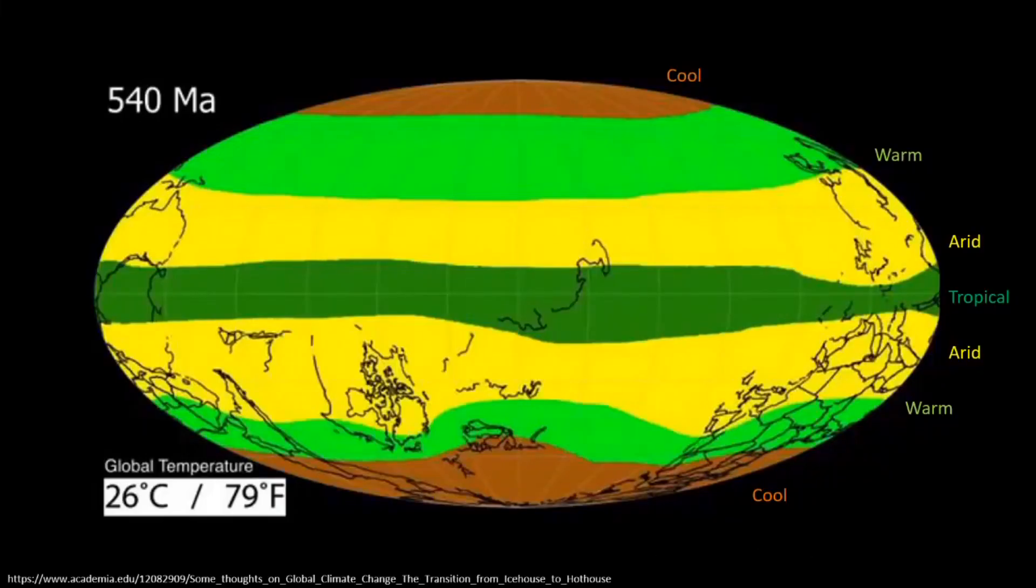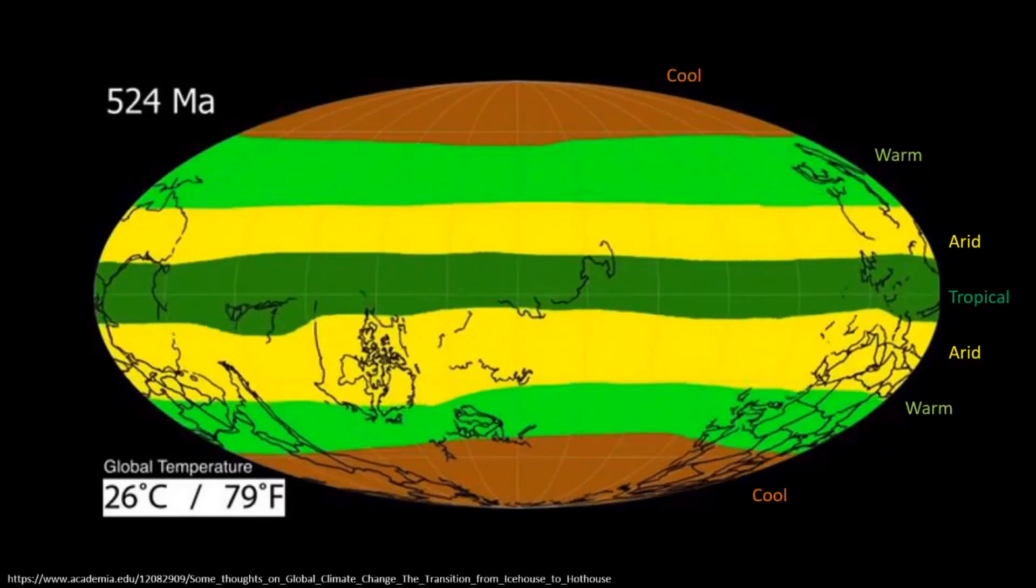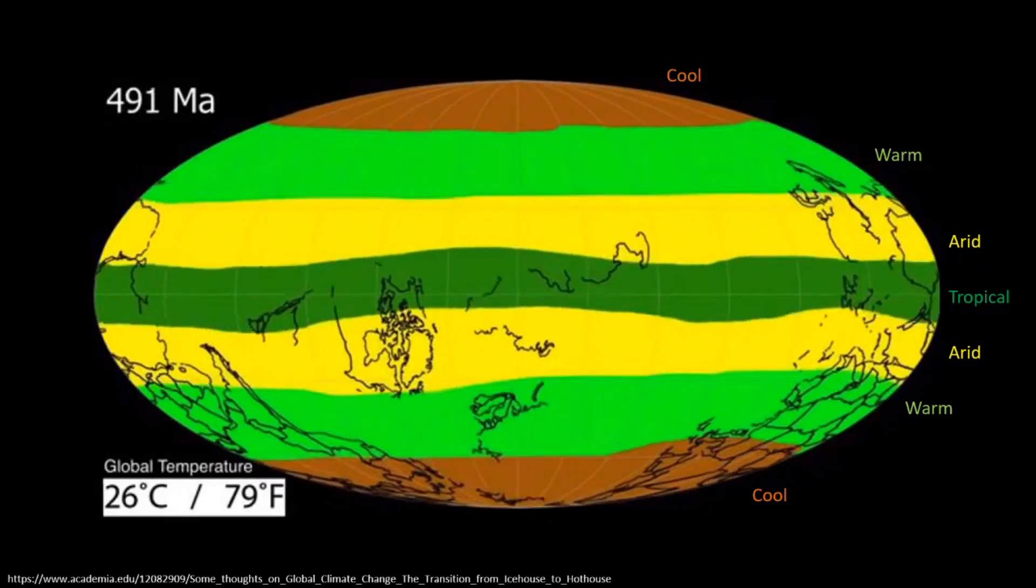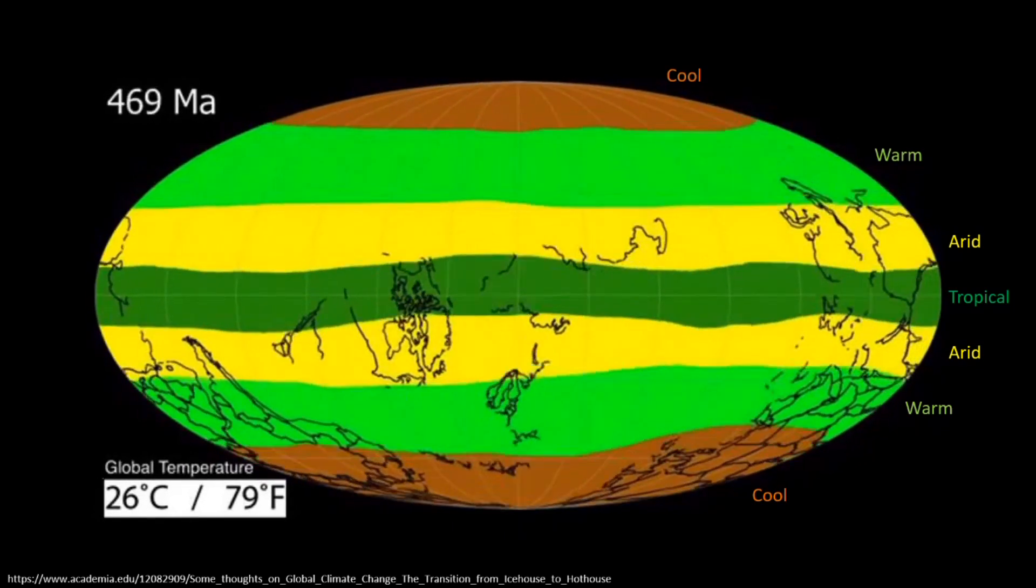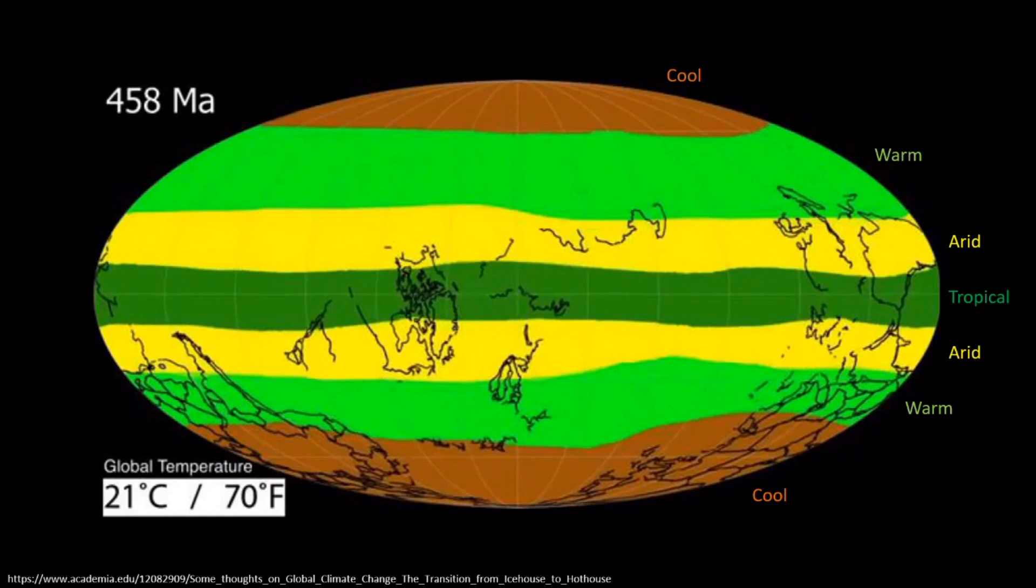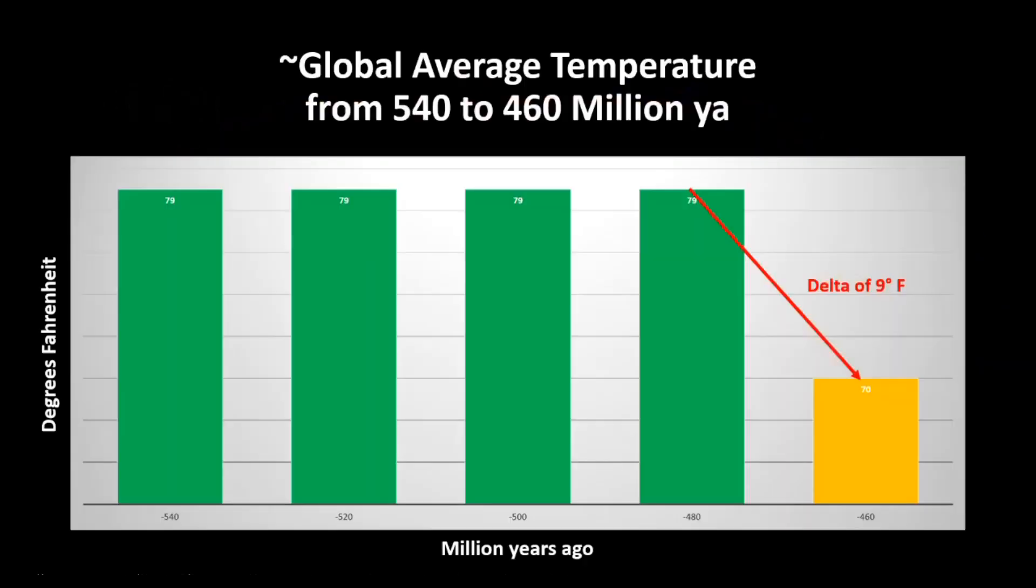The global temperature and climate zones had remained roughly constant, but between 464 million years ago and 458 million years ago the temperature dropped by nine degrees Fahrenheit.